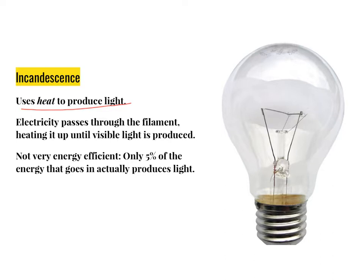In an incandescent light bulb, the part that's going to heat up and produce the light is called the filament. So electricity passes through. Electricity passes through, heats up the filament, which then produces light.